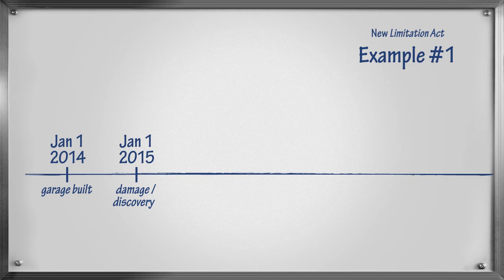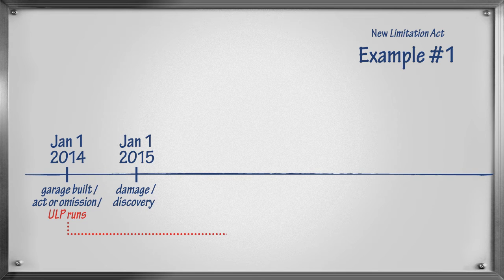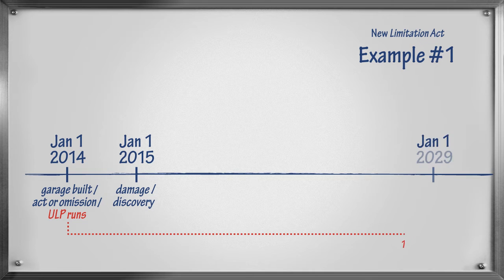The act or omission occurred on January 1, 2014, when the garage was built. This is when the Ultimate Limitation Period begins. The Ultimate Limitation Period will expire 15 years later, on January 1, 2029.